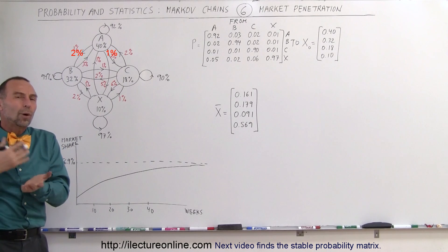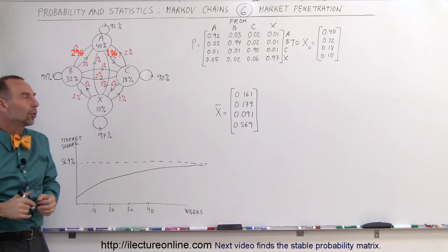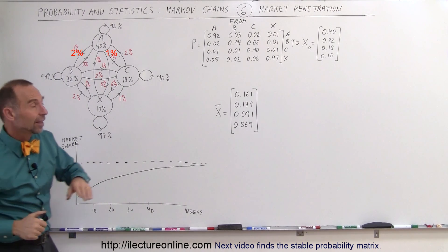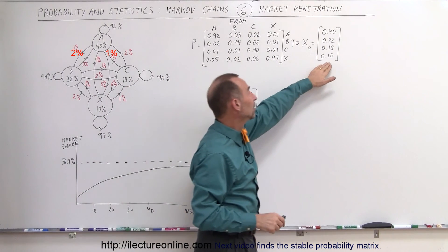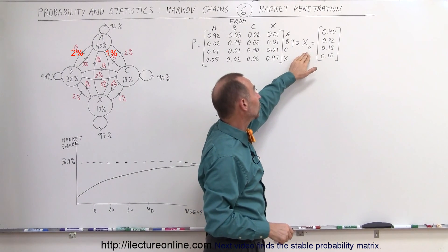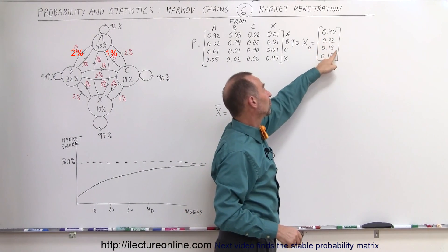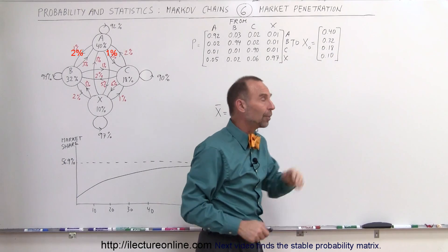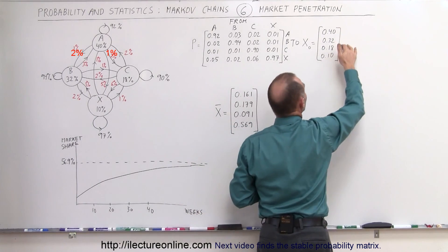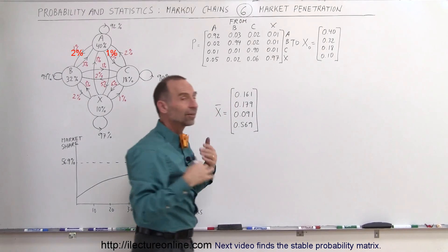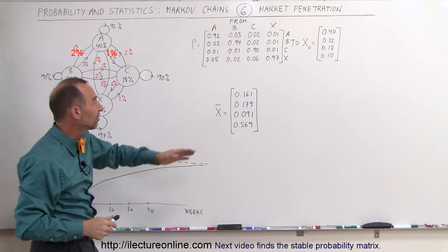The question now is what will happen after a certain amount of time goes by? So if we have this as our initial state condition—the starting state 40%, 32%, 18%, and 10% for the four brands (remember this is brand A, B, C, and X)—after a lot of time has gone by, let's say 30, 40, 50, 60 weeks...